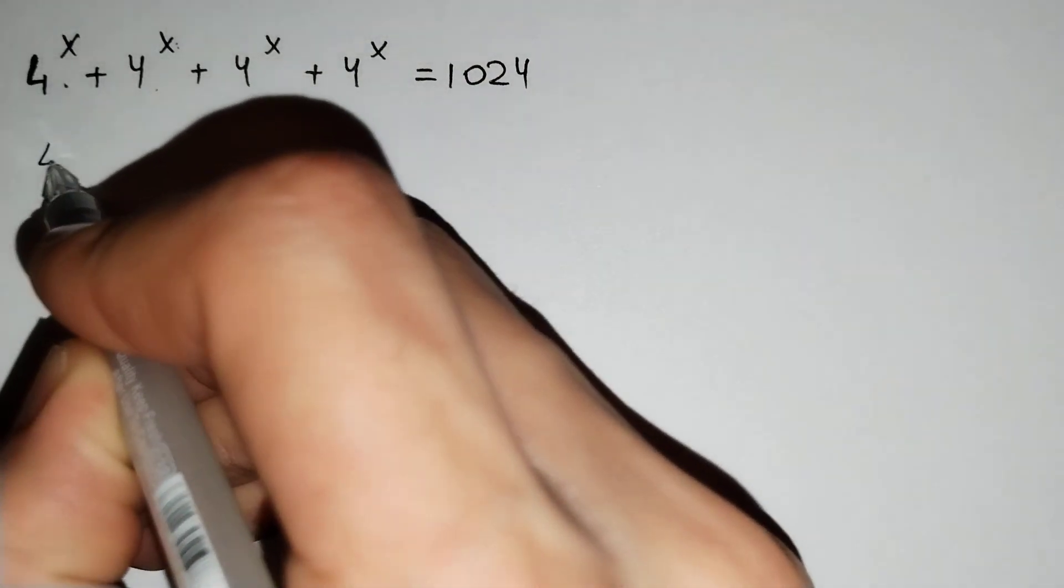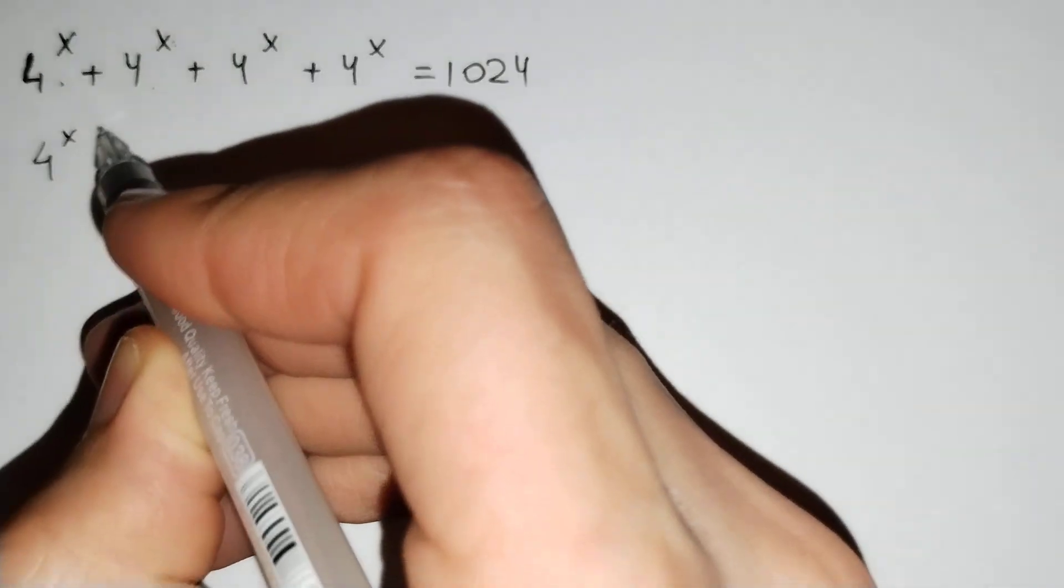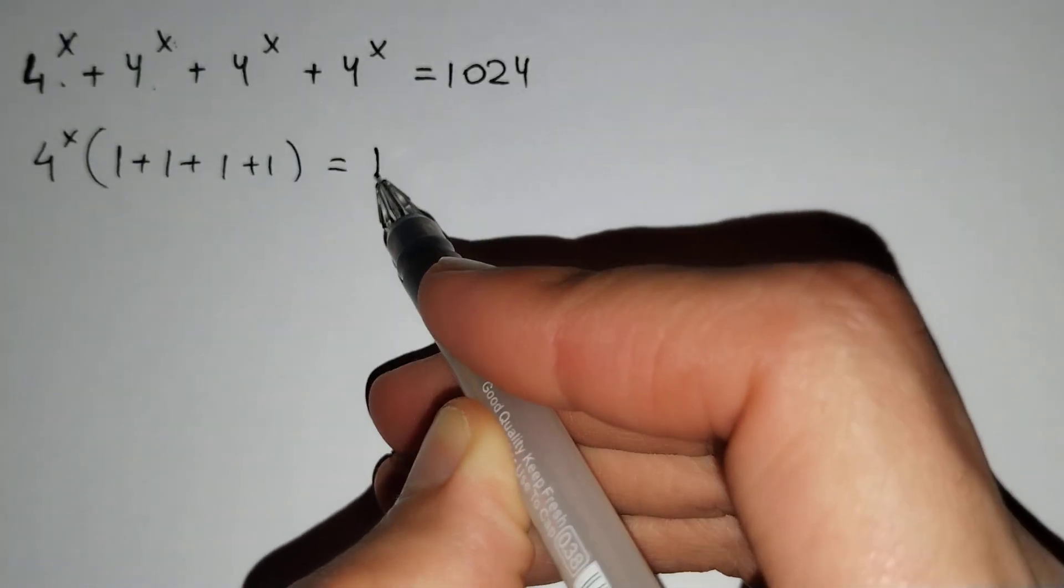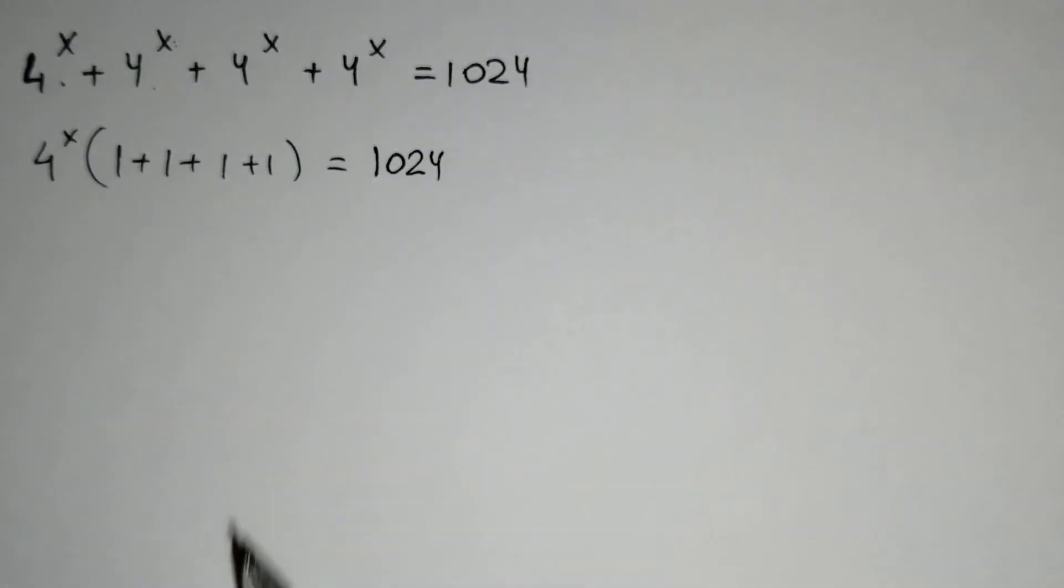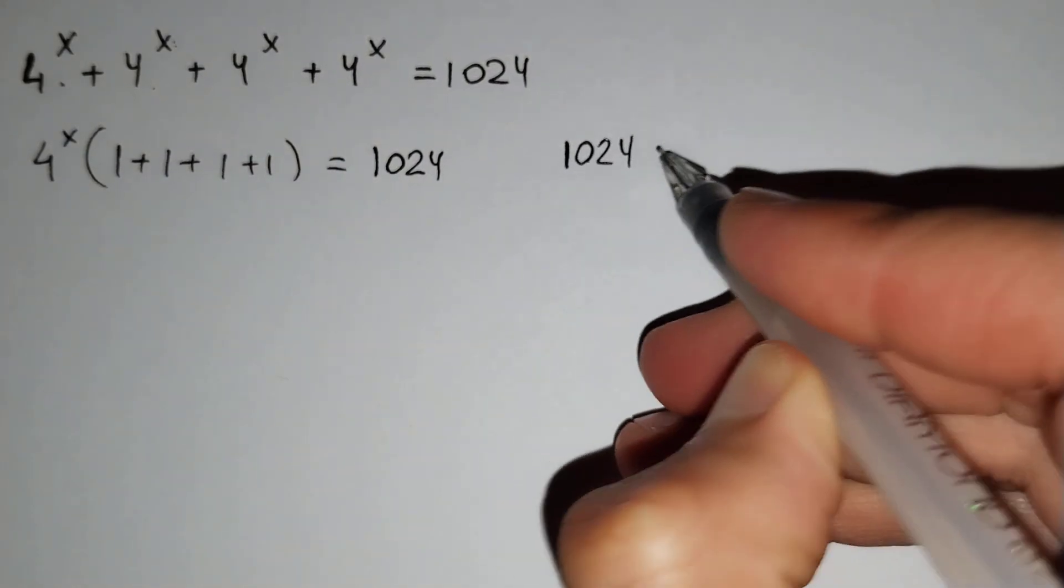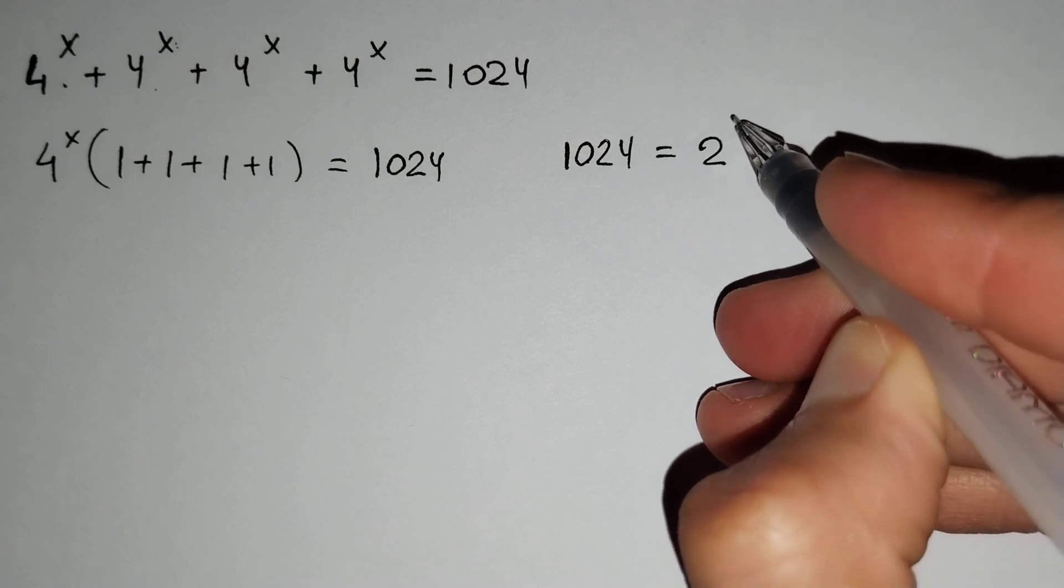Firstly, if we take 4^x out of the brackets, 1 + 1 + 1 + 1 remain here equals 1024. We know that 1024 equals 2^10.